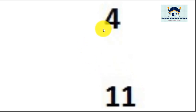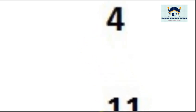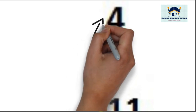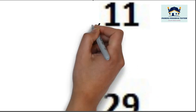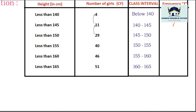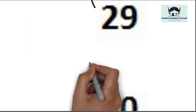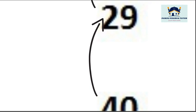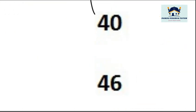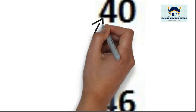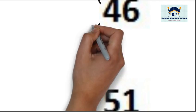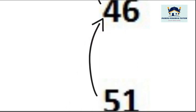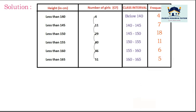Now we write the frequencies by subtracting consecutive cumulative frequencies: 4 as is, 11 − 4 = 7, 29 − 11 = 18, 40 − 29 = 11, 46 − 40 = 6, 51 − 46 = 5. So n is equal to 51.